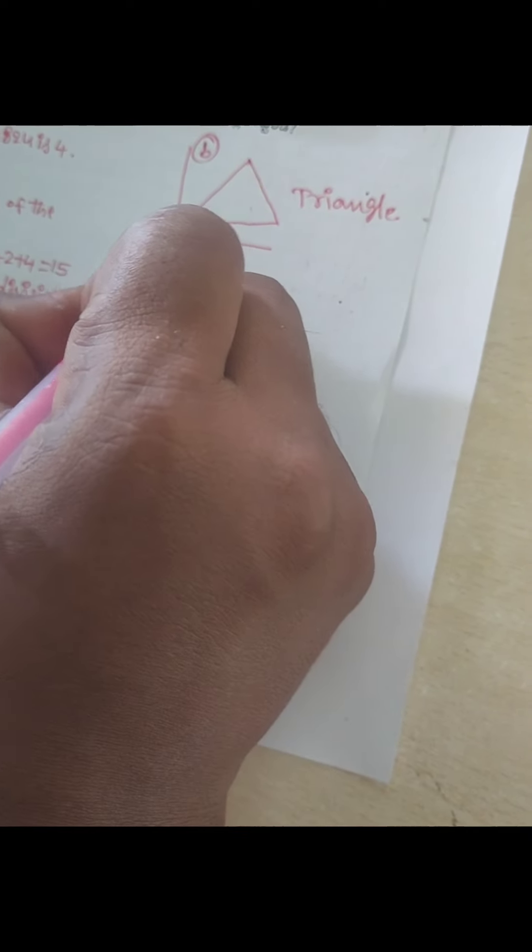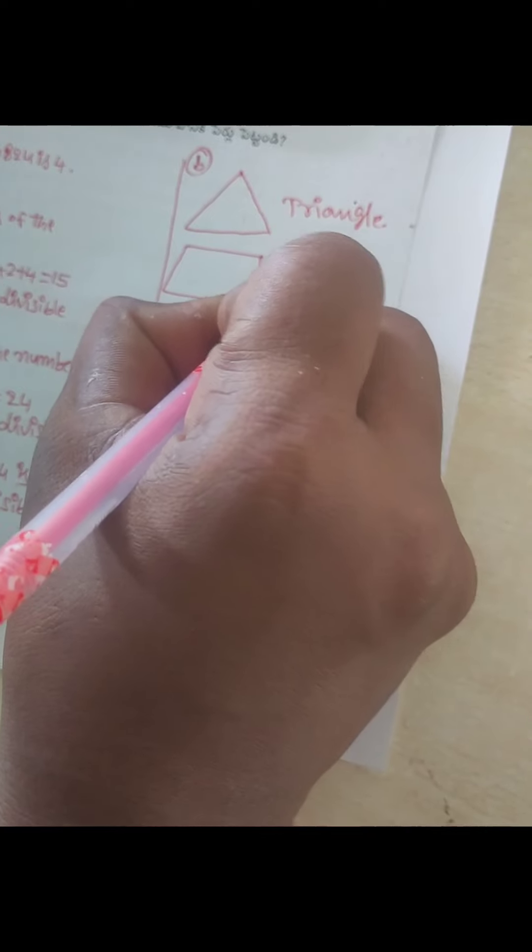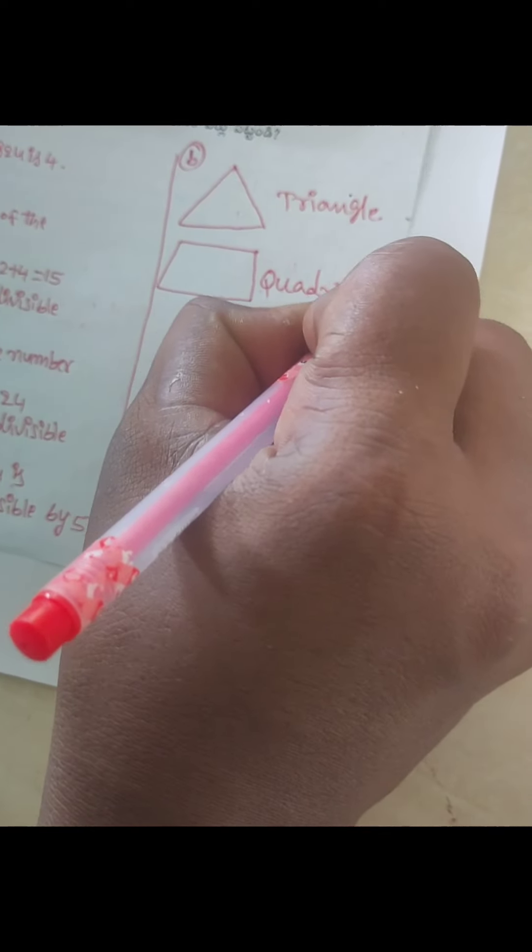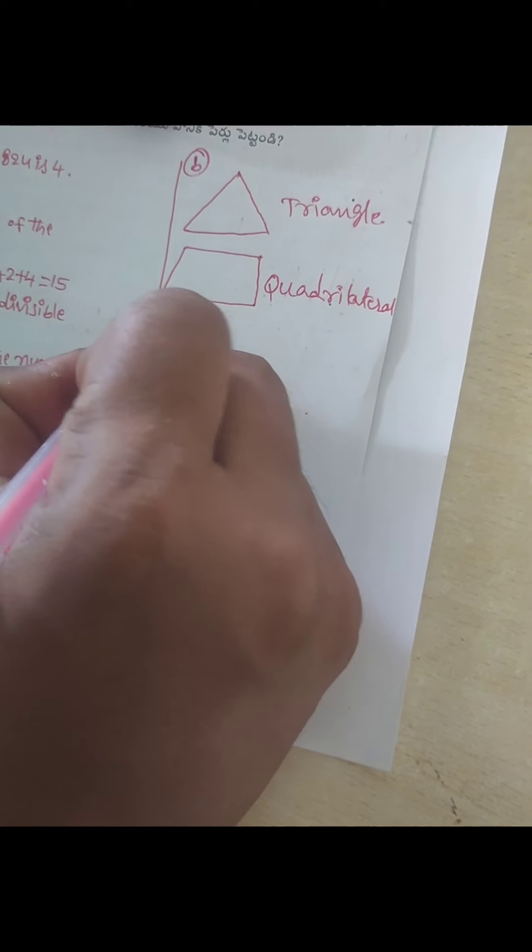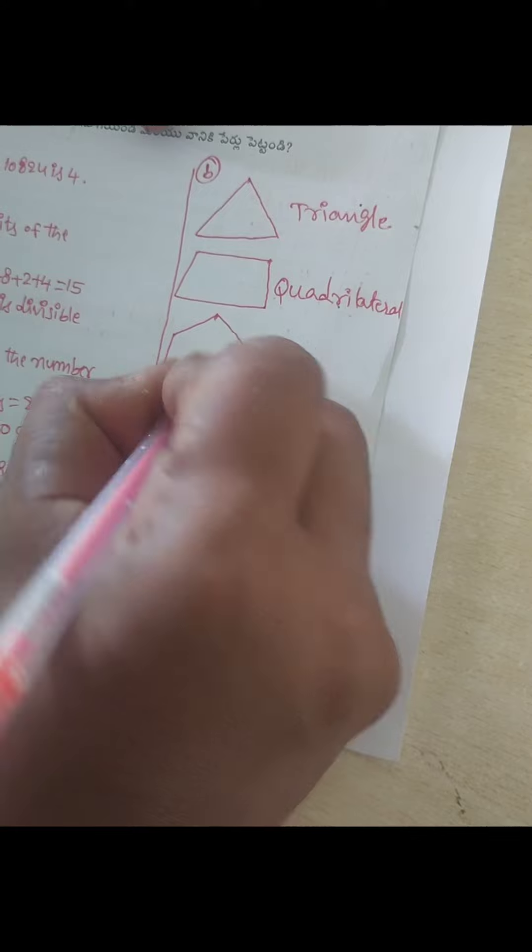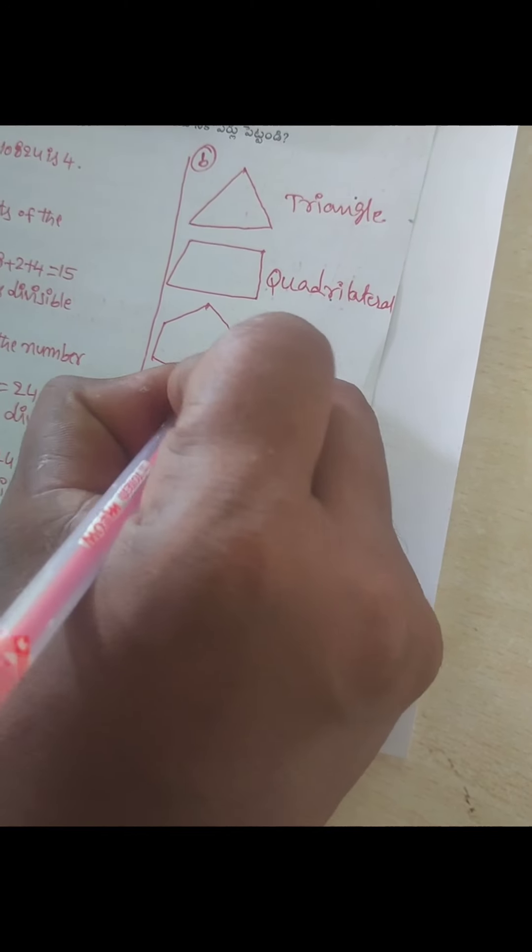Four-sided polygon, its name is quadrilateral. Next, five-sided polygon: one, two, three, four, five. Five-sided polygon, its name is pentagon.